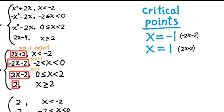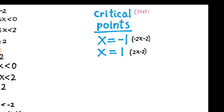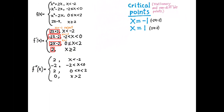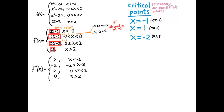But is that all the critical points? No. Remember that critical points include both stationary points and non-differentiable points. We found all the stationary points, but I still have to find the non-differentiable points. There was a non-differentiable point at x equals negative 2 because f prime discontinuously changed from negative 2 to positive 2. So we include x equals negative 2 on our list of critical points, noting it was a non-differentiable point. Now I have a complete list of critical points.